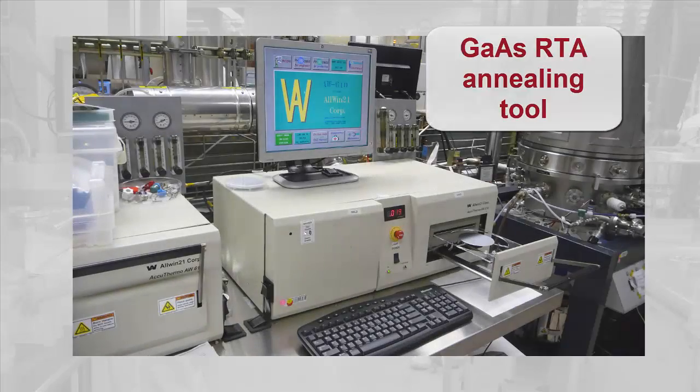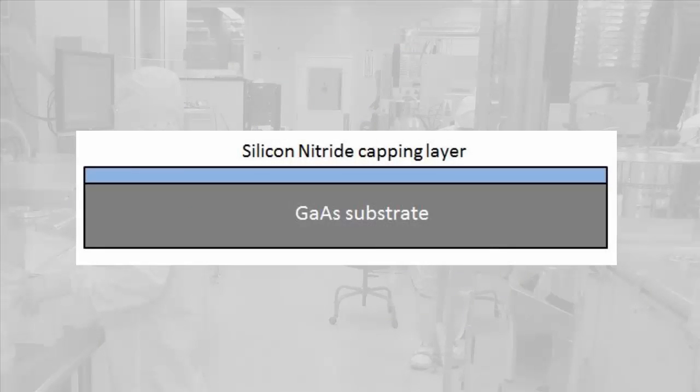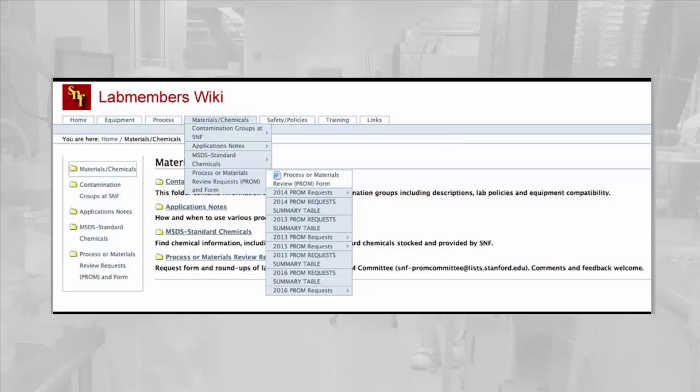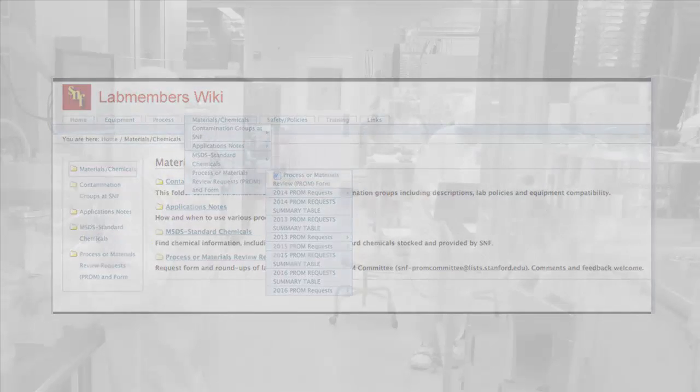Heating should be limited to below 350 degrees C and for very limited amounts of time. Capping layers of silicon nitride or silicon oxide can protect samples for extended heat processing. Be sure to contact the PROM committee before processing in any system where the conditions are not already detailed.